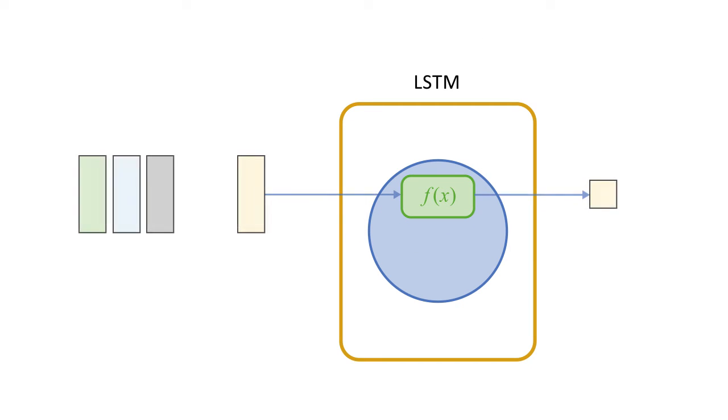In an LSTM, the nodes are recurrent, but they also have an internal state. The node uses an internal state as a working memory space, which means information can be stored and retrieved over many time steps.